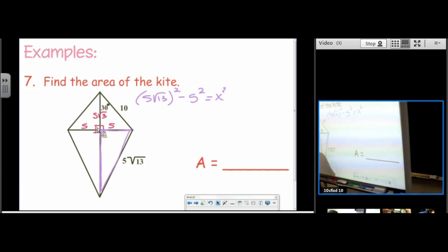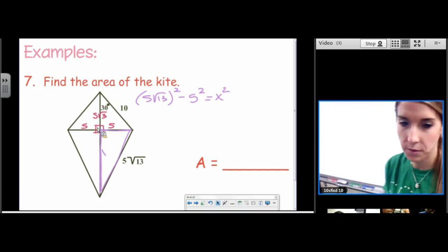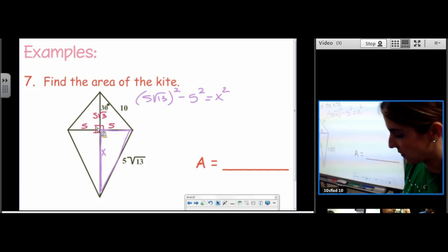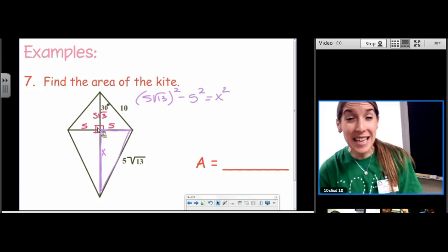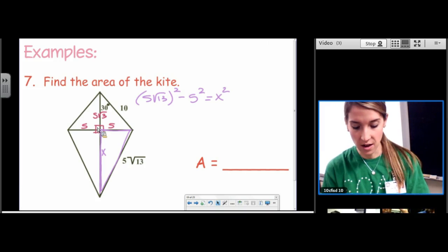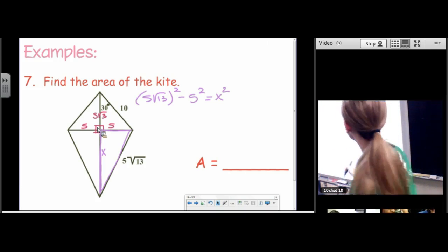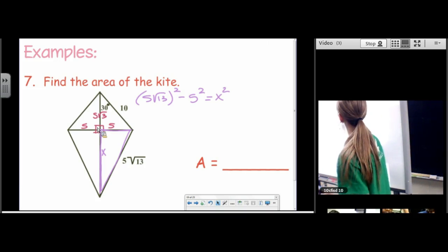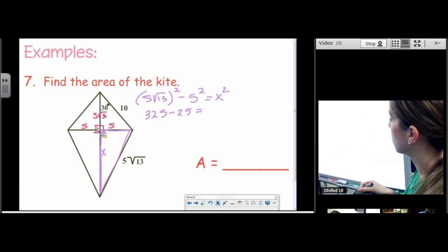We have to do Pythagorean theorem. So find x. Be careful when you square 5 root 13. 5 squared is 25. And square root of 13 squared is 13. So 25 times 13.